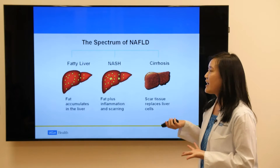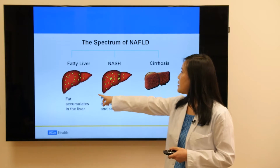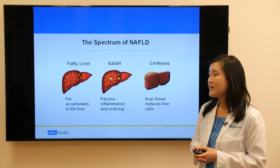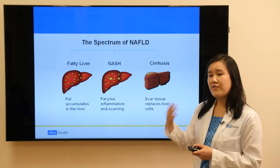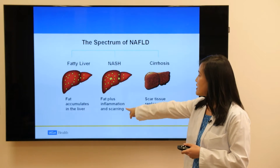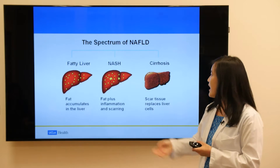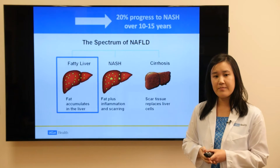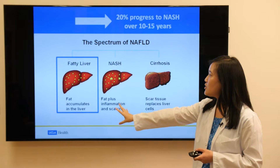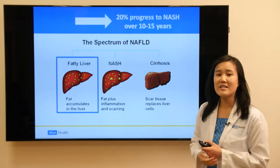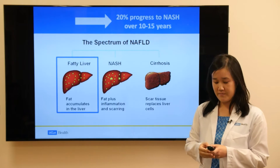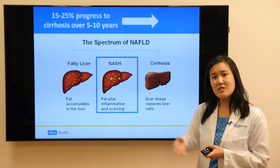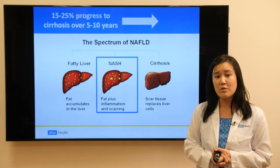Here's the spectrum of fatty liver in general. You start with simple steatosis, or just simple fatty liver, with fat accumulation in the liver. This can progress to NASH, which is fat accumulation plus inflammation. Over time, if the inflammation is there, that can lead to complete scarring of the liver, also known as cirrhosis. About 20% of patients with fatty liver progress to NASH over 10 to 15 years. Looking at patients who already have NASH, about 15 to 25% of them progress to cirrhosis over 5 to 10 years.